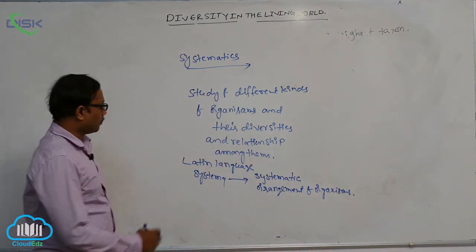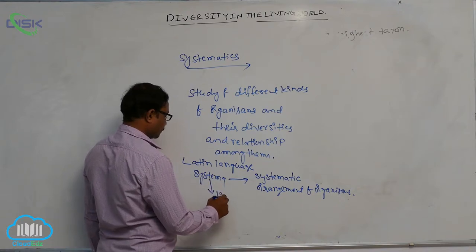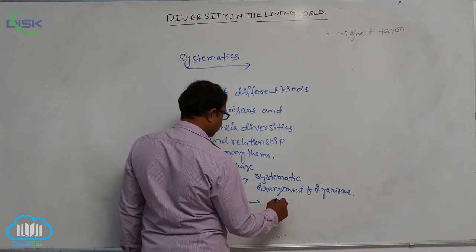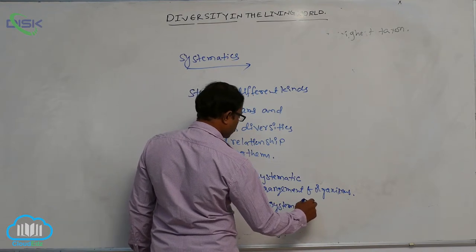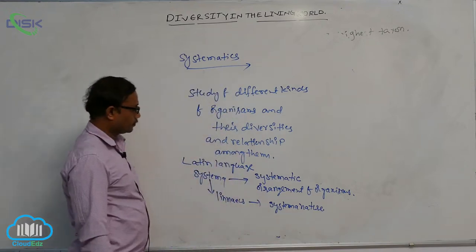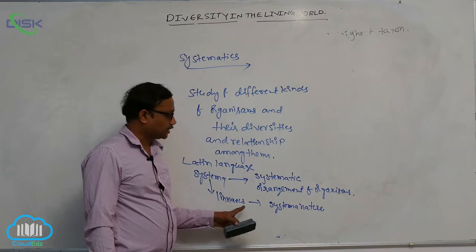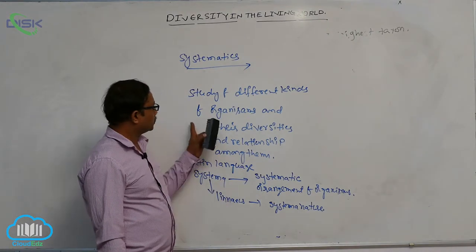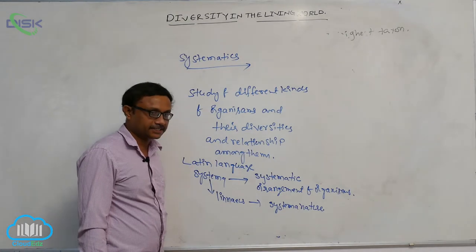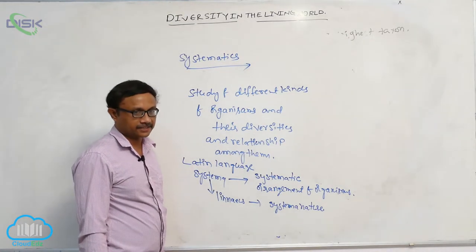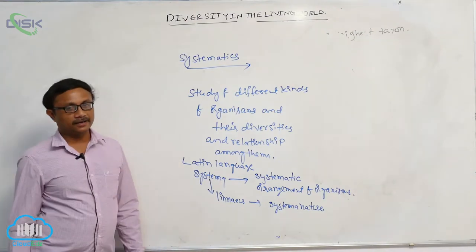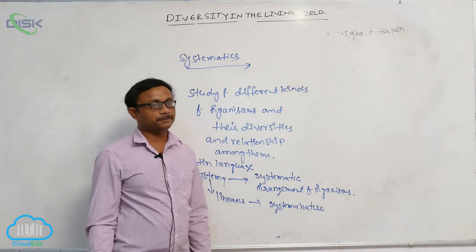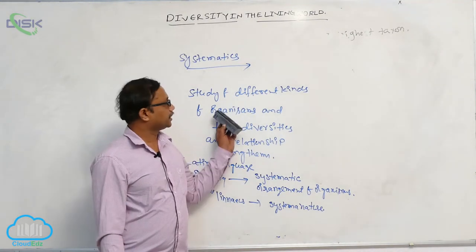The word 'systema' was first used by Linnaeus for his publication Systema Naturae. Initially, systematics included identification, characterization, nomenclature, and classification. It was later elaborated to include the phylogenetic system of classification, explaining evolutionary relationships among organisms.